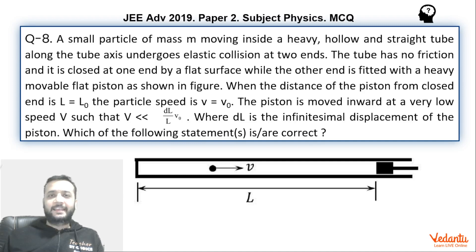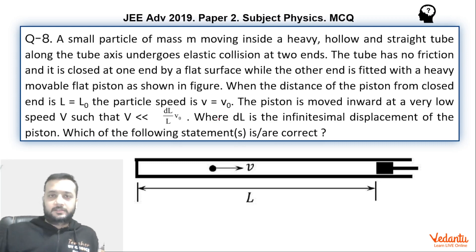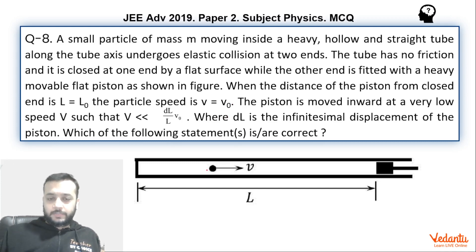Hi dear students. Let's see this question that came in JEE Advanced Paper 2 Physics in the year 2019. The question is from the topic of collisions. It was one of the better questions in this paper which stumbled many of the good students as well. So let's see what's happening here.